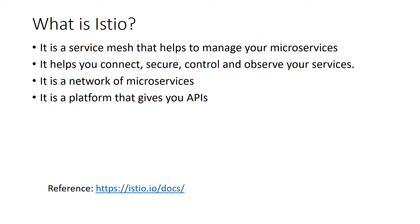Istio is a service mesh that helps you manage your microservices. It helps you to connect, secure, control, and observe your services. It's also a network of microservices and can be known as a platform that gives you APIs to manage, control, or securely connect your microservices with each other.